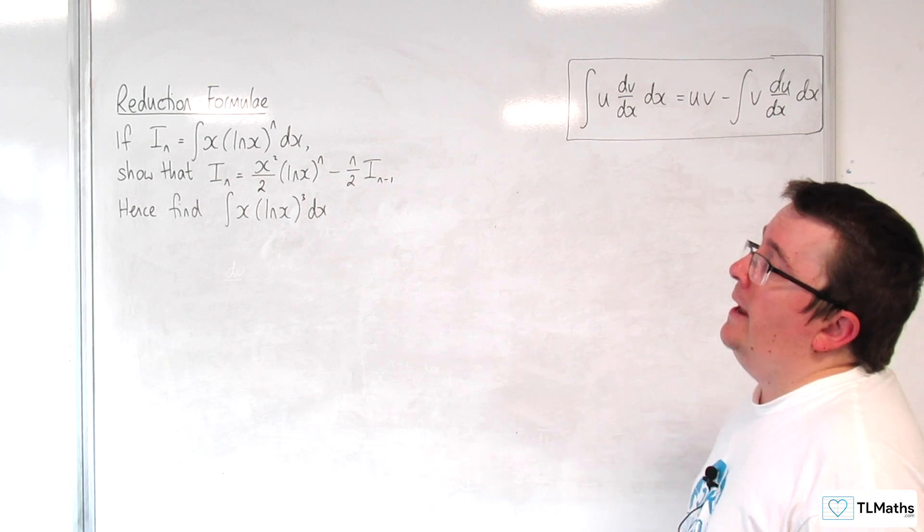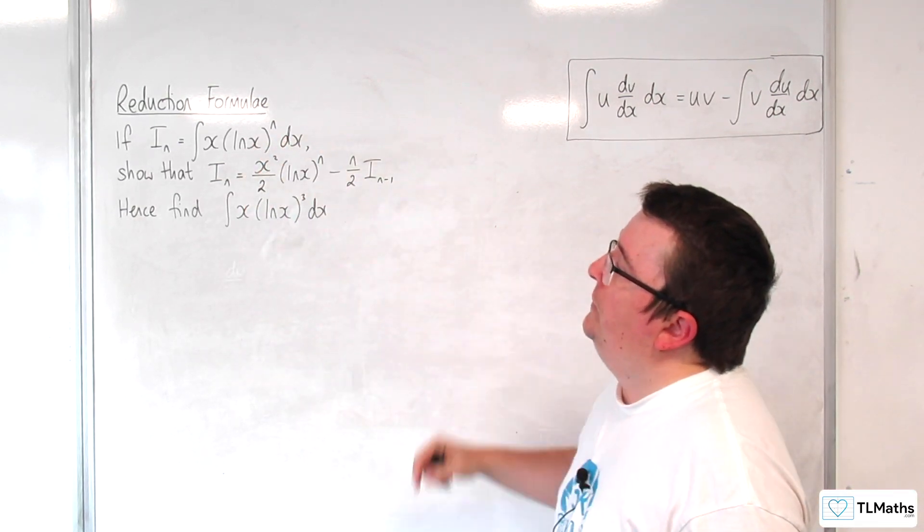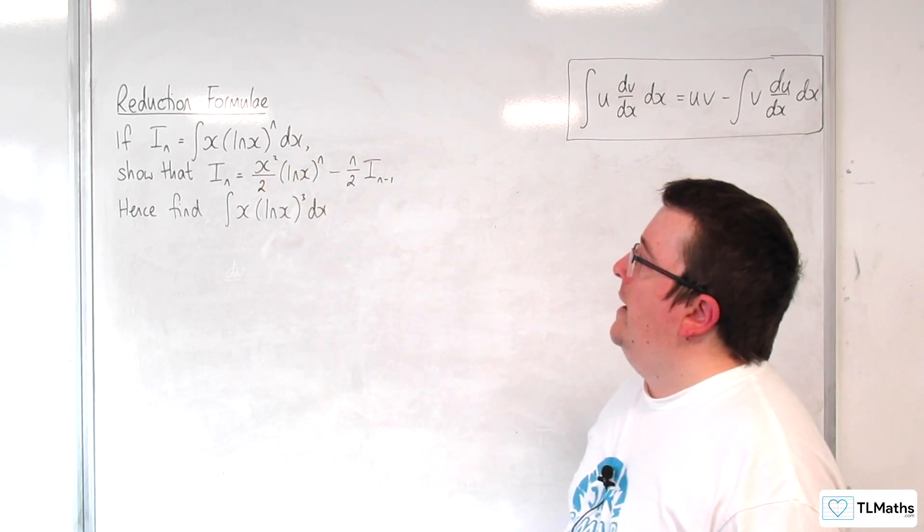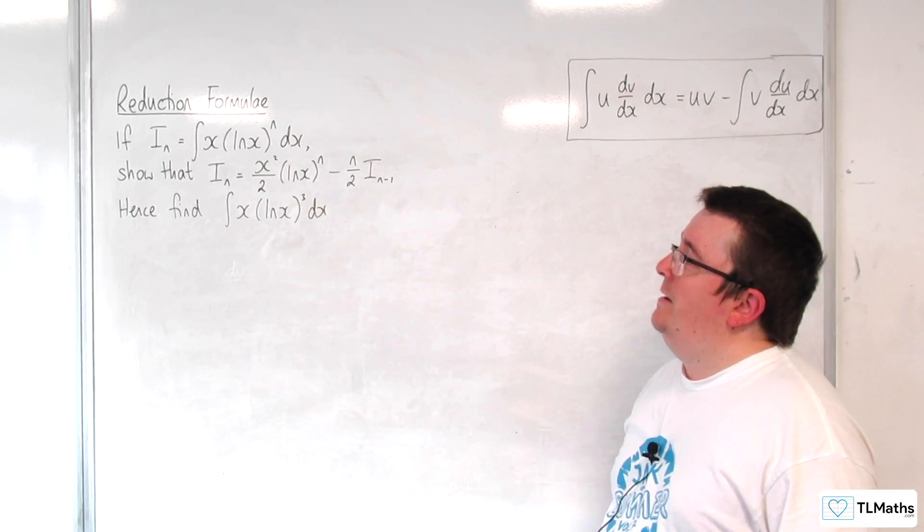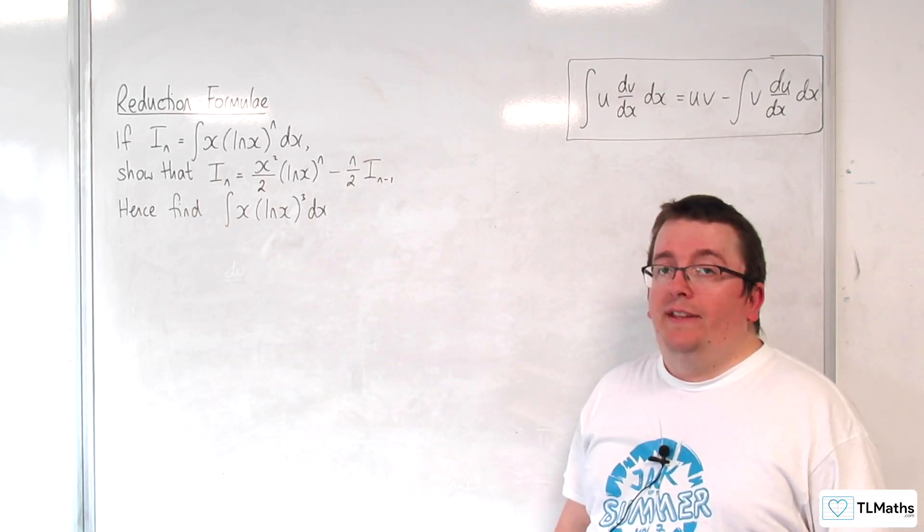In this video, if i_n is equal to the integral of x times log x to the n dx, show that i_n is equal to x squared over 2 log of x to the n take away n over 2, i_n minus 1, hence find the integral of x log x cubed dx.